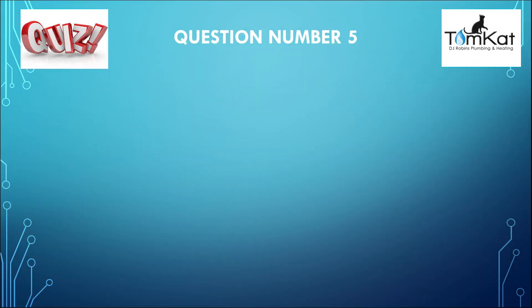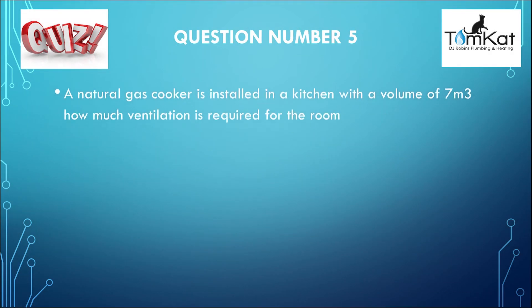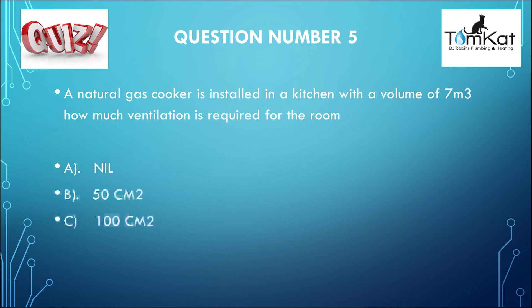Question number five: A natural gas cooker is installed in a kitchen with a volume of 7 metres cubed. How much ventilation is installed in the room? Is it A, 0? Is it B, 50 centimetres squared? Or finally, is it C, 100 centimetres squared? That is the end of question five.